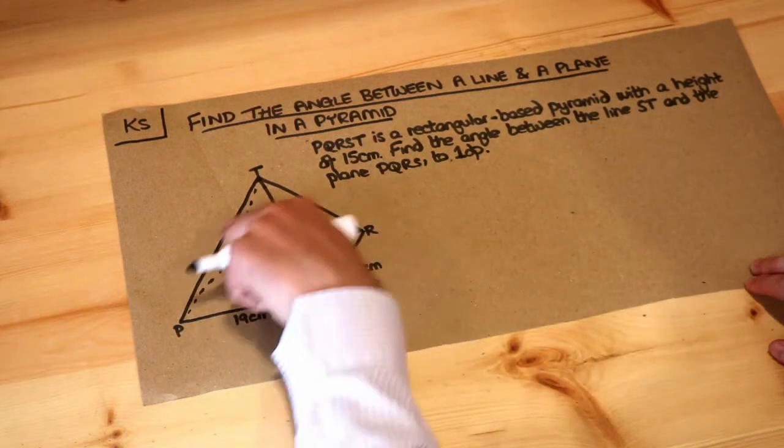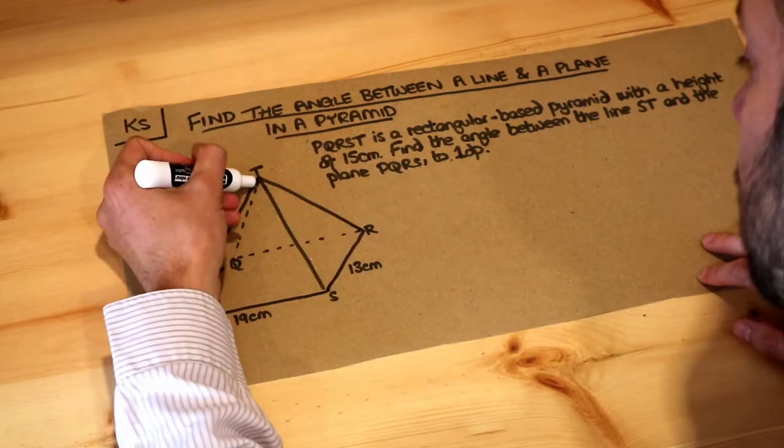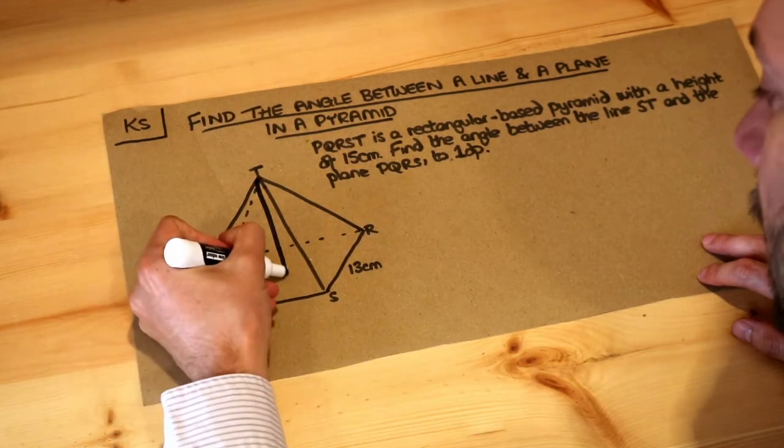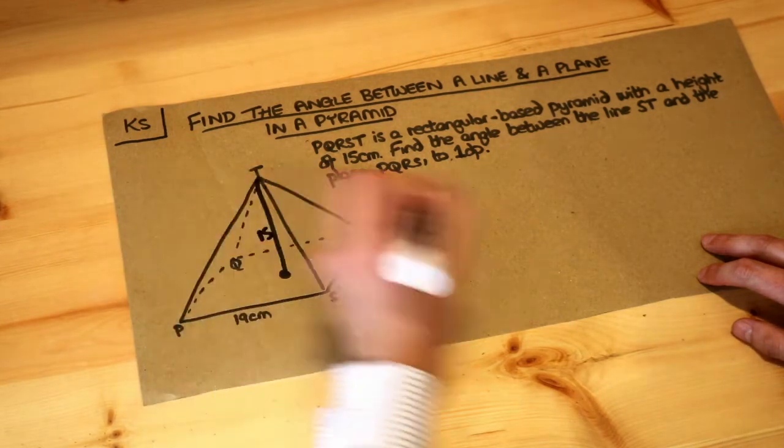We've got this rectangular base pyramid here with a height of 15. Let me draw in that height actually. So that's the perpendicular height from centre of the bottom to here. That's 15 centimetres.